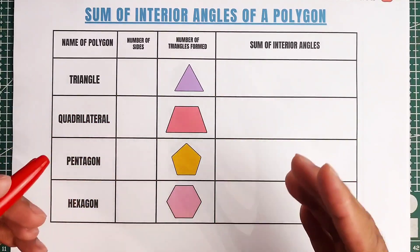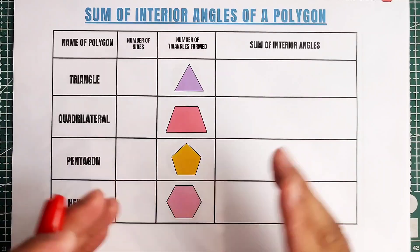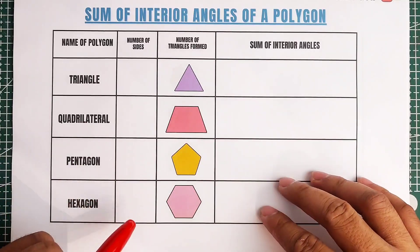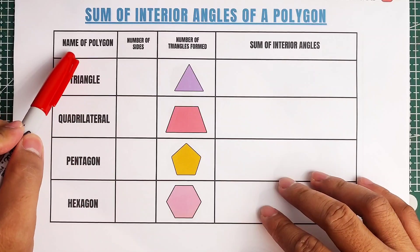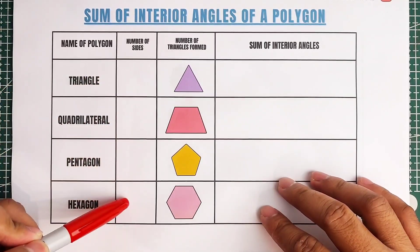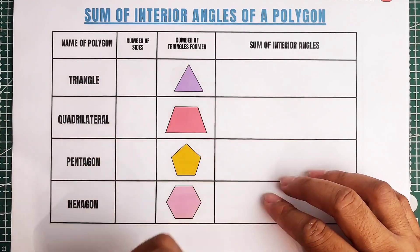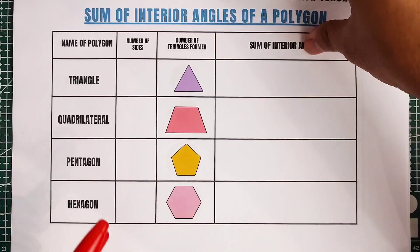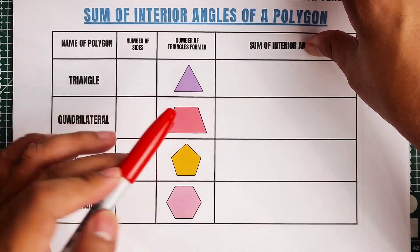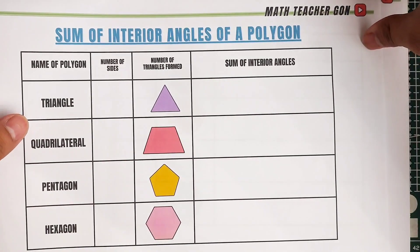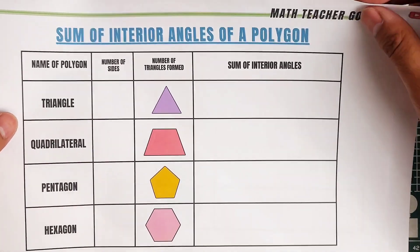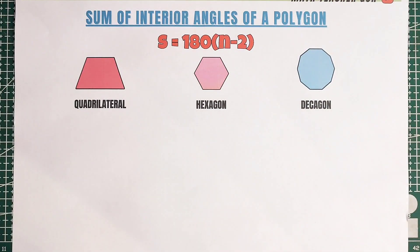What we have here is a table that we need to complete for the entire video under regular polygon. We have here the name of polygon, the number of sides that are missing, and then the sum of interior angles. This is the first table from triangle up to decagon. To complete this, we need to practice more on how to find the sum of the interior angles of these given polygons.